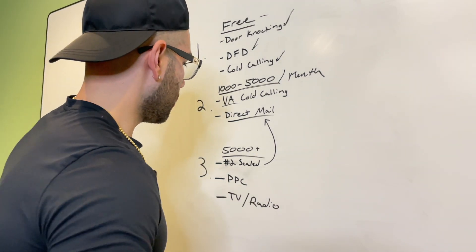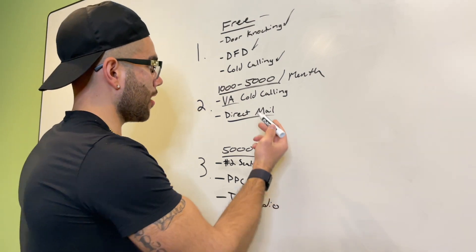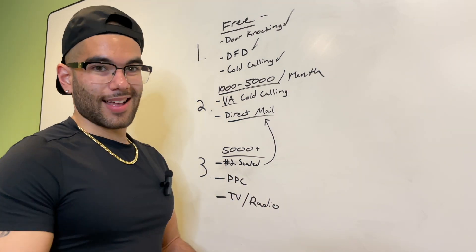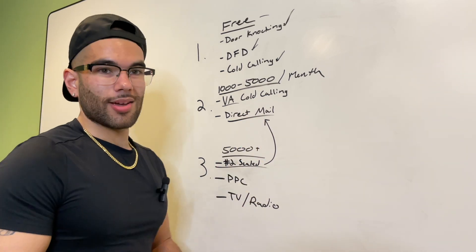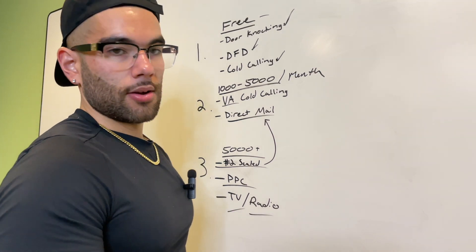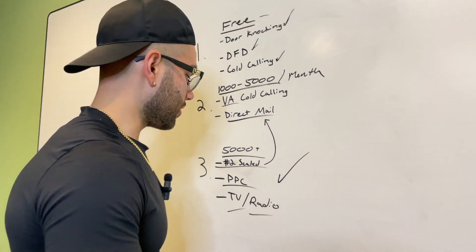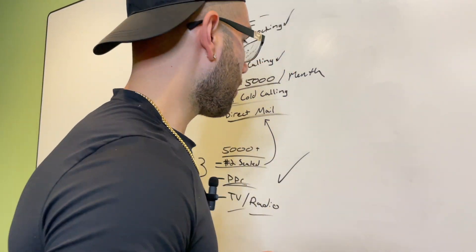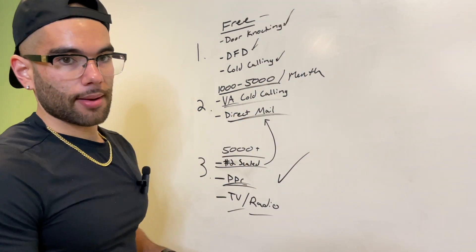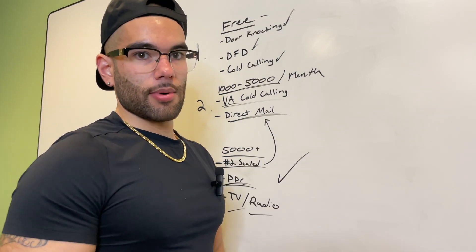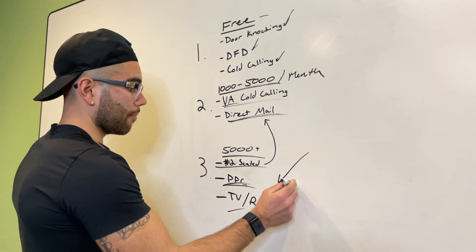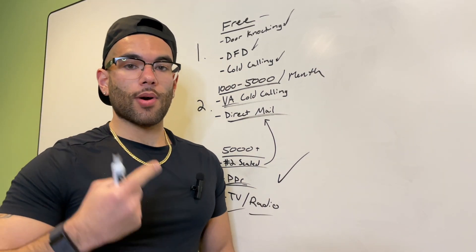Down in the $5,000-plus mark, you have one of the first two categories scaled up — meaning multiple virtual assistants, spending $5,000-plus on direct mail with multiple salespeople on your team. Or you get into something like PPC, TV ads, radio ads, or SEO. This stuff is very expensive. The goal is to scale up your virtual assistant, scale up your direct mail, and maybe get into PPC or radio ads. Once you are at category three doing it on a consistent basis, that's when you know you have a good business operating.